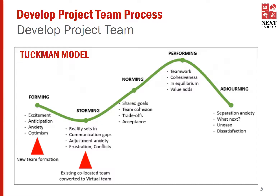The third stage is norming. After the storming, the team starts norming, which essentially means you will become an effective team and develop on the areas you were lacking in the storming stage. Characteristics of this stage include having a set of shared goals. The team will be fine sharing responsibilities and will understand it's a shared goal they are all working towards. You will also have team cohesion — the team is able to perform as a single unit.